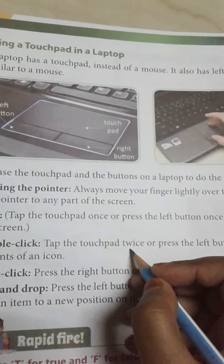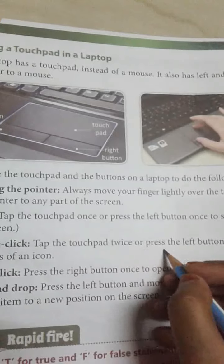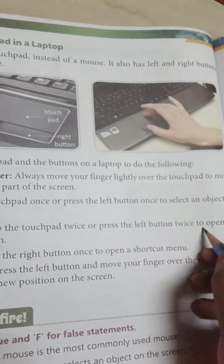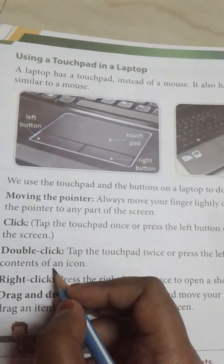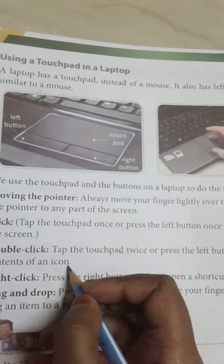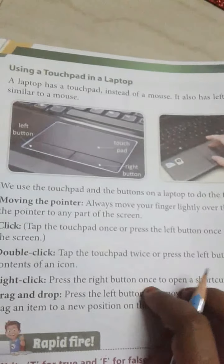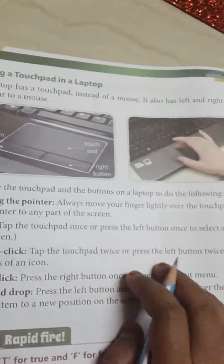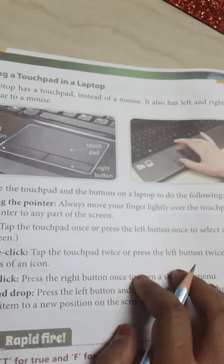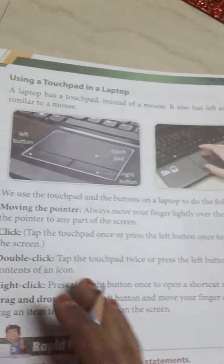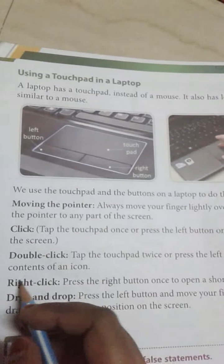Double-click: tap the touchpad twice, or press the left button twice, to open the contents of an icon. We can click the touchpad twice or press the left button twice so the contents of the icon will open.